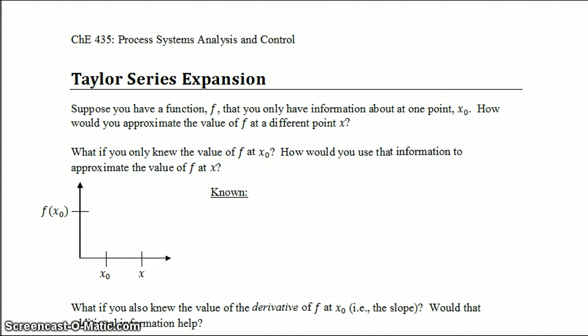Suppose you have a function f, and that you only have information about that function at one point, say x0. How would you approximate the value of f at a different point, x?